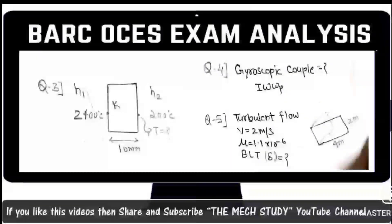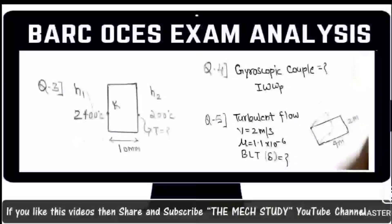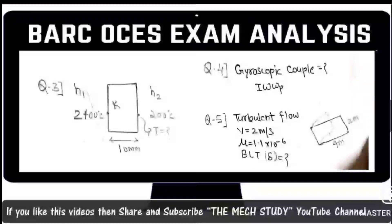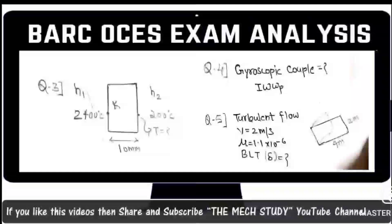The next question is from theory of motion, specifically the gyroscopic chapter. You need to calculate the gyroscopic couple. The data provided includes moment of inertia I, angular velocity ω, and precession angular velocity ωp. Put these values into the formula to easily calculate the gyroscopic couple. These are very easy questions and have also appeared in Engineering Services Examination papers.